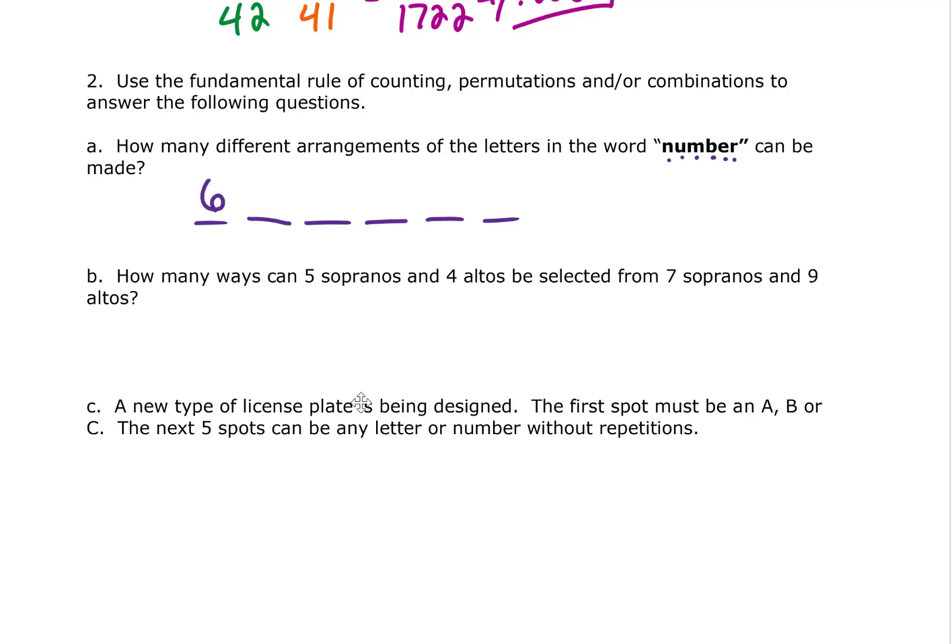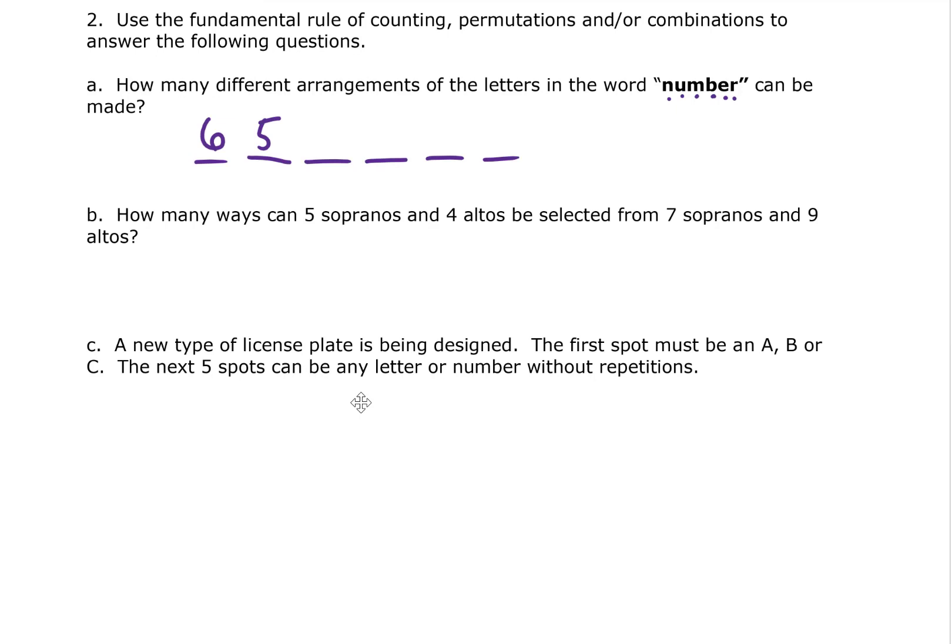It could be an N, a U, an M, a B, an E, or an R. Once we've made that selection we only have five letters left for our choice for our second letter. Once we've selected those two letters we only have four left and so on. Note that that can be written as six permutation, and typing that into my calculator I'm getting 720 as my answer.